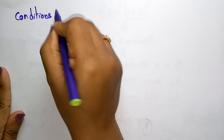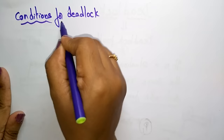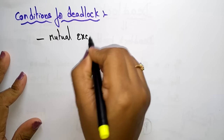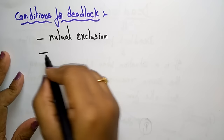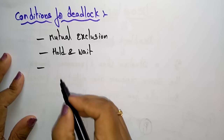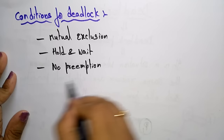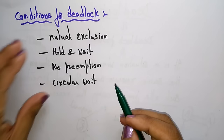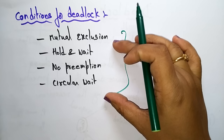Now let us see the conditions for deadlock. The deadlock may occur when the process is in mutual exclusion, or when the process is in a hold and wait state, or when there is no preemption, or when there is a circular wait. All four conditions must happen simultaneously for a deadlock to occur.